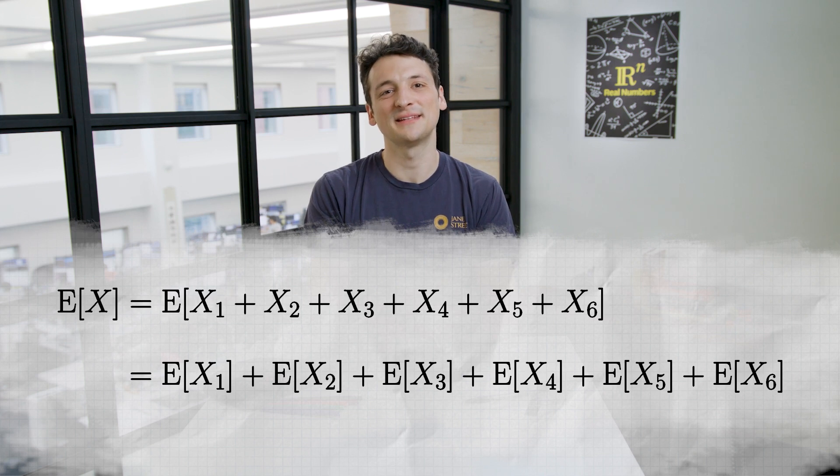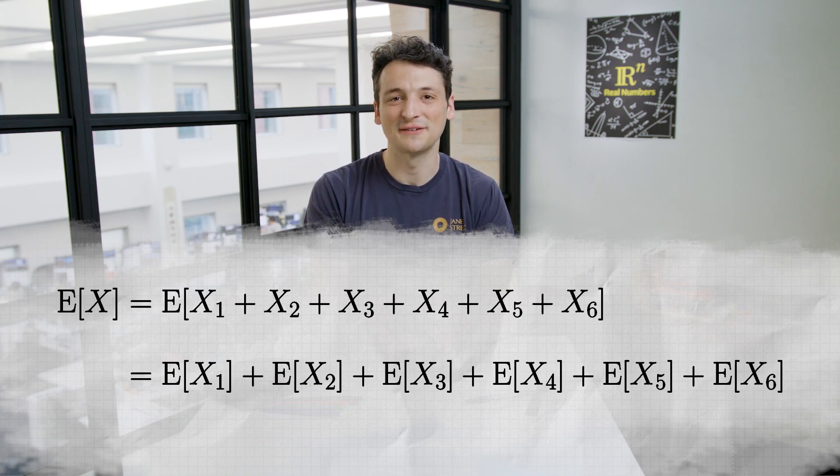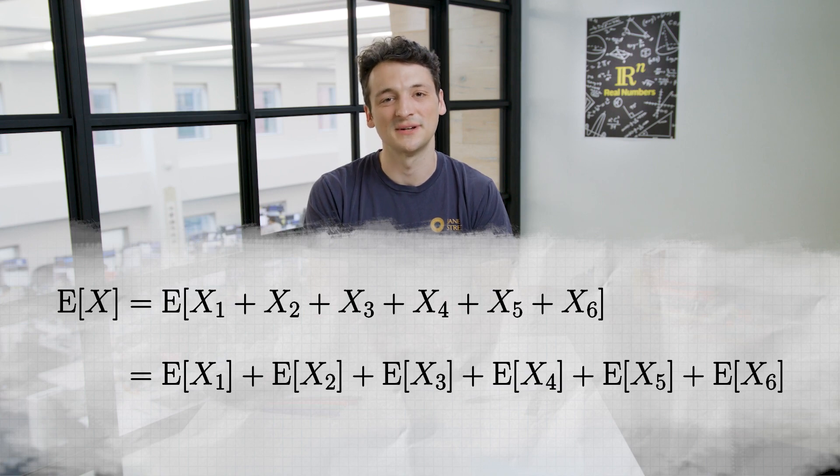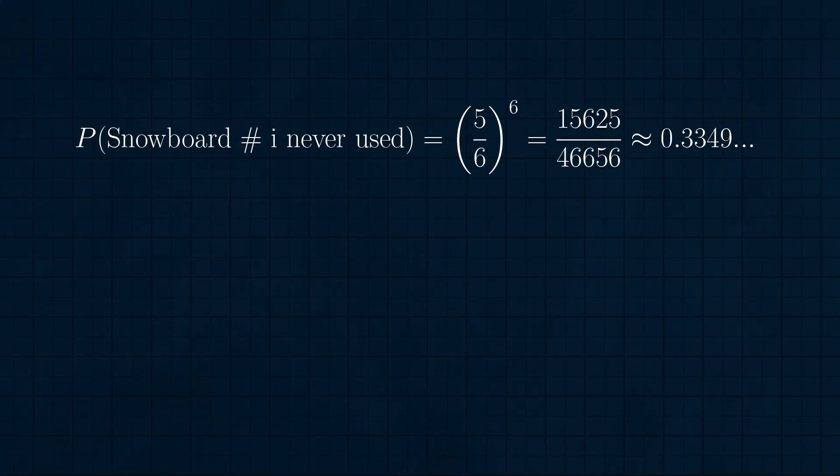So now we just need to find the expected value of x sub i for each i. The expected value of an indicator variable is just the probability of the condition occurring, so we want to know the probability Rachel used her ith snowboard at some point during the week. For any one snowboard, the probability that Rachel never used it is the chance that on each of the six days, she chose one of the other five boards, which has probability 5/6. Therefore, the probability Rachel never used her ith snowboard is (5/6)^6, or about 0.3349.